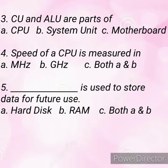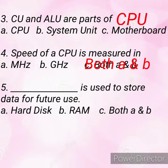Question three: CU and ALU are parts of — do you know the full forms? The full form of CU is Control Unit and the full form of ALU is Arithmetic and Logic Unit. So CU and ALU are parts of CPU. Question four: the speed of a CPU is measured in A) megahertz, B) gigahertz, or C) both A and B. The correct answer is C, both A and B.